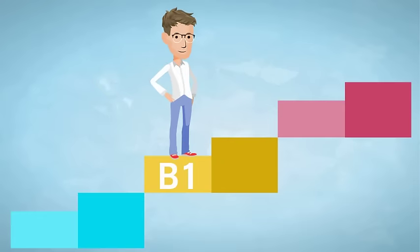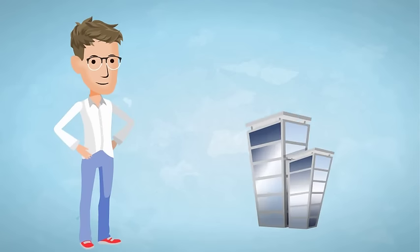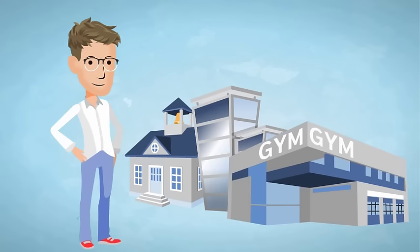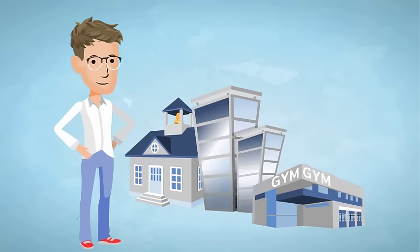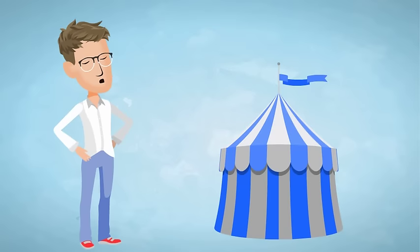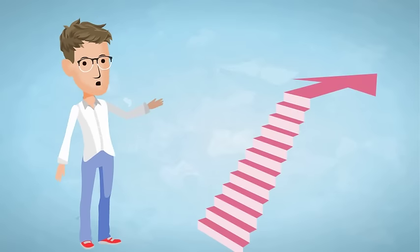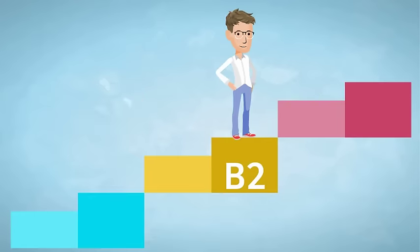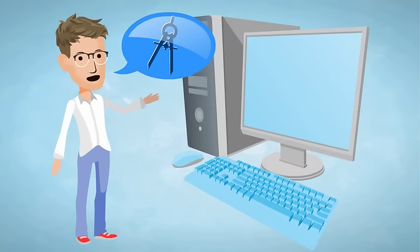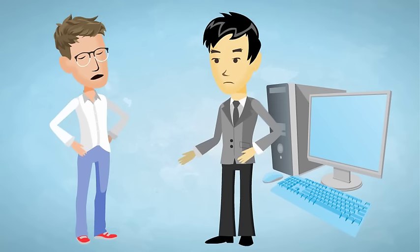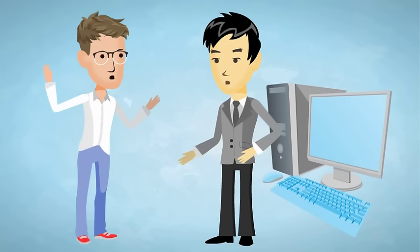By B1, a learner is becoming more independent, and can understand the main points of things to do with work, school or leisure, if they're stated fairly clearly. They can deal with most general situations, and can describe experiences, events, dreams, hopes and ambitions. At level B2, learners should be able to understand the main ideas of difficult texts on all sorts of topics, including technical discussions in their specialist field, and they can talk fluently with native speakers without any pressure on either side.